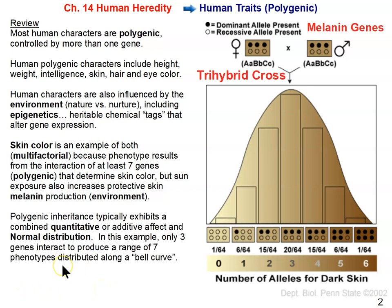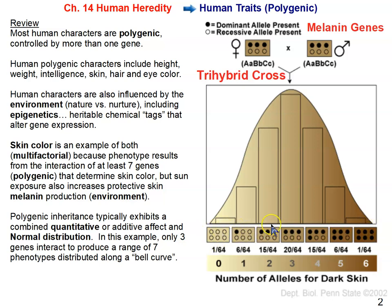These polygenic traits exhibit a combined quantitative or additive effect, and they show a normal distribution — a bell-shaped curve. The additive effect can be seen as we go from genotype to genotype resulting in phenotype to phenotype. As we go from very light skin color to very dark, we're gaining more dominant alleles. The dark shaded circles represent dominant alleles and the light ones are recessive alleles. That's how polygenic inheritance works.